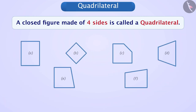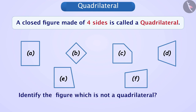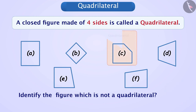Observe the given figures. Among these, one figure is not a quadrilateral. Can you tell me which one? The figure shown is not a quadrilateral.